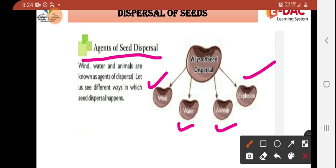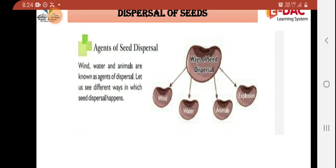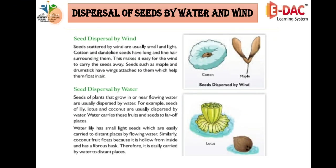How does seed dispersal by wind work? Seeds scattered by wind are usually small and light. The seeds that travel with wind from one place to another are small and light. For example, cotton seeds — cotton ka jo seed hota hai — are small and light.